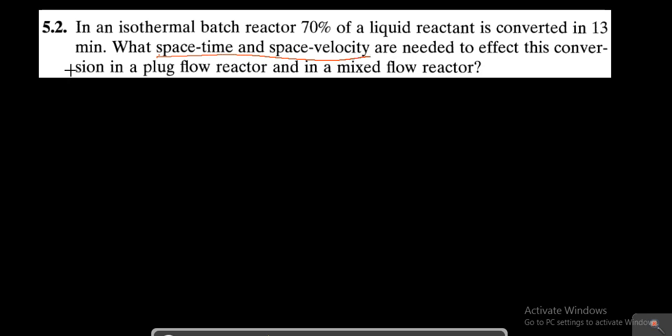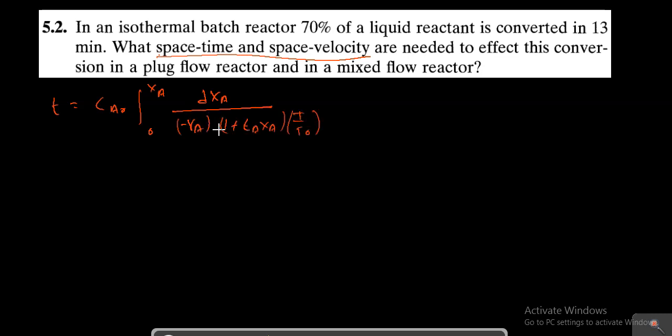In an isothermal batch reactor, 70% of a liquid reactant is converted in 13 minutes. We need to find the space time and space velocity for a plug flow reactor and a mixed flow reactor. The performance equation gives T equal to CA0 times the integral from 0 to XA of dXA divided by (-rA)(1 + εA·XA)·(T/T0). For a plug flow reactor with a liquid phase, T equals CA0 times the integral of dXA divided by -rA.